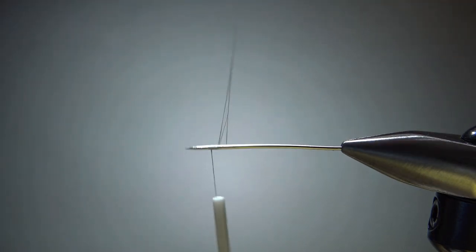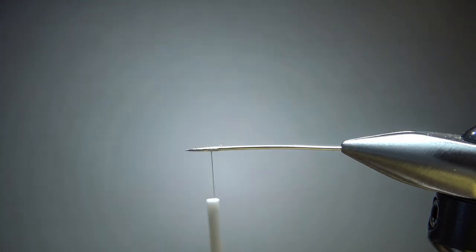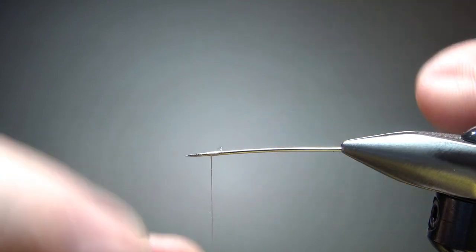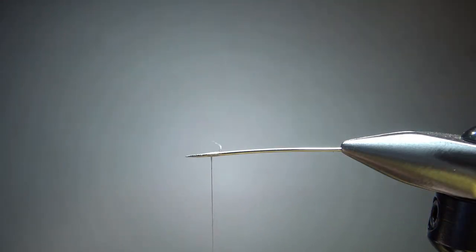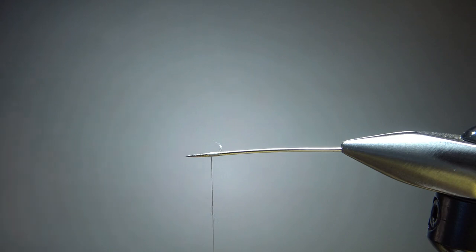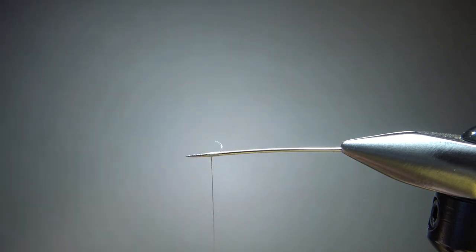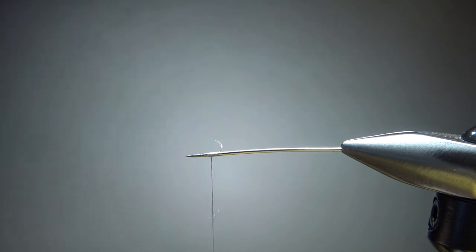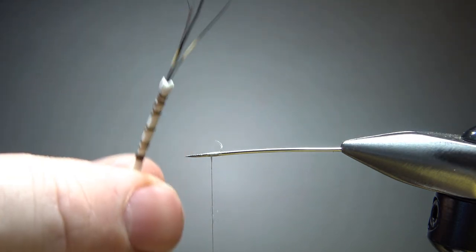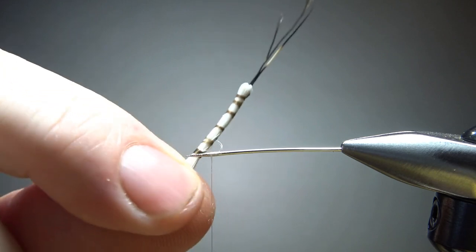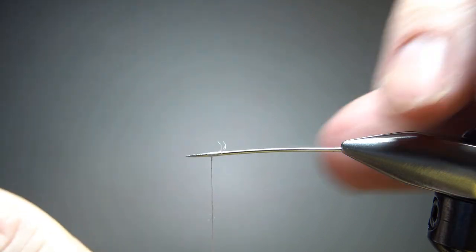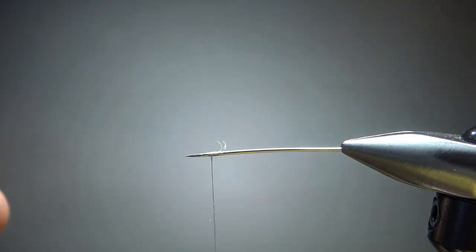If I just pulled down on it to get some more thread out of my bobbin, I might bend that needle. So you do have to be a little bit careful right there. You don't necessarily have to match your thread to the bucktail that you're using. If you didn't, you're just going to end up with something where you'll be able to see the ribs. But I want to kind of hide them, so I'm going to use white thread and white bucktail.